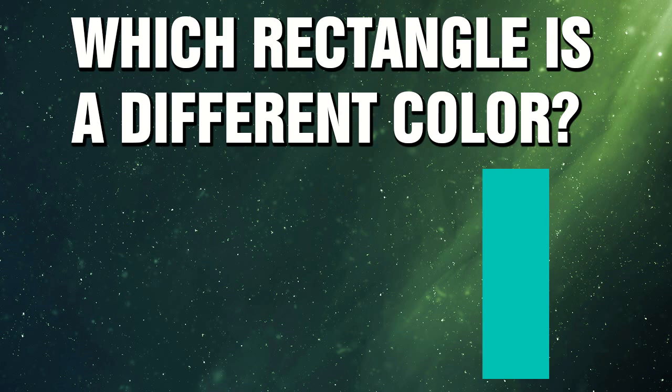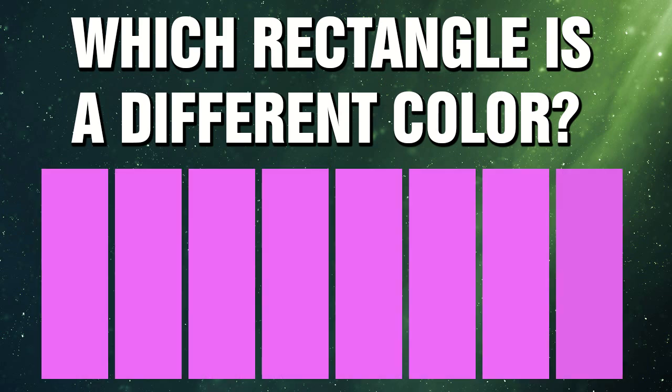So let's try another difficult one. Let's look at this group right here. Once again, eight rectangles. All the same color, but only one of them is a slightly different shade. The difference is very small, so it might be hard to spot. So look a little bit closer. Which one is it? Are you ready? The answer is this one.